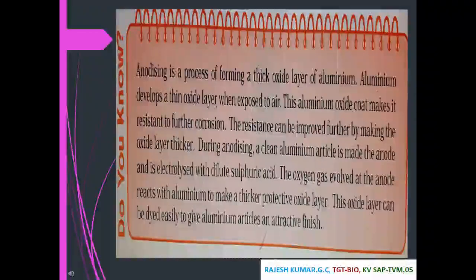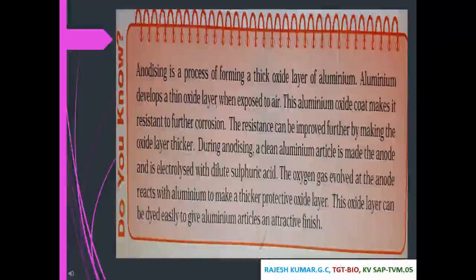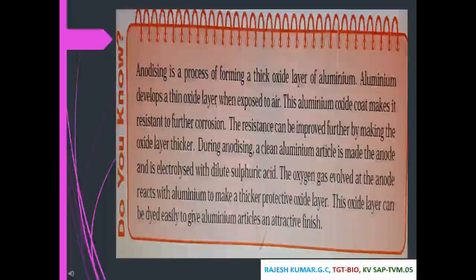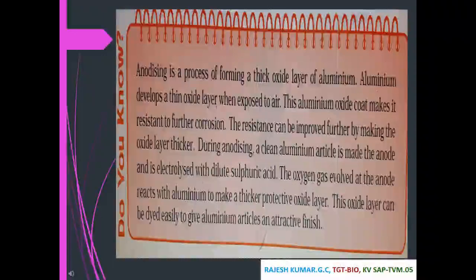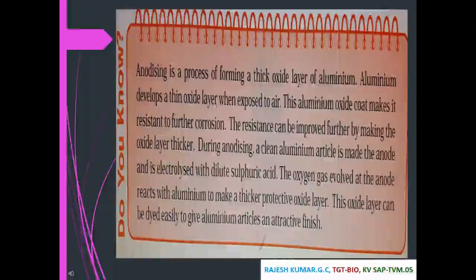Anodizing is a process of forming a thick oxide layer on aluminium. Aluminium naturally develops a thin oxide layer when exposed to air, which makes it resistant to further corrosion. This resistance can be improved by thickening the oxide layer. During anodizing, a clean aluminium article is made the anode and electrolyzed with dilute sulfuric acid. The oxygen gas evolved at the anode reacts with aluminium to make a thicker protective oxide layer, which can be dyed to give aluminium articles an attractive finish.